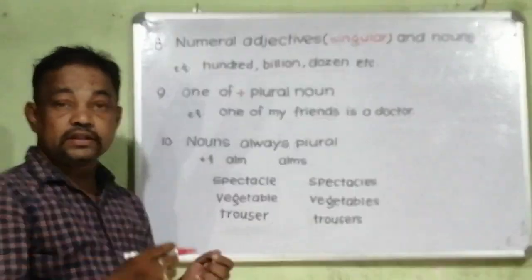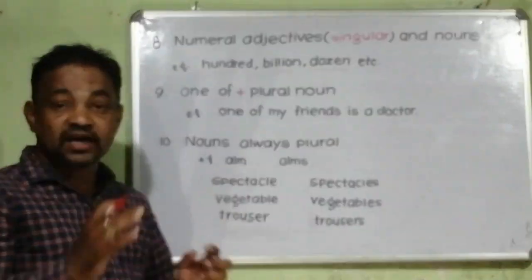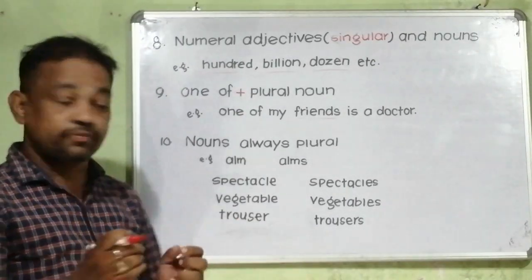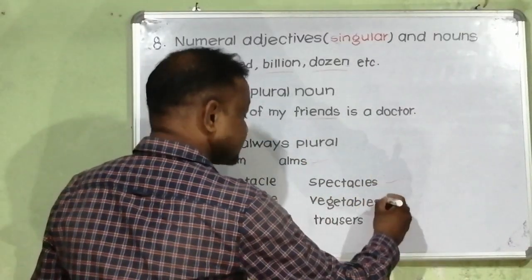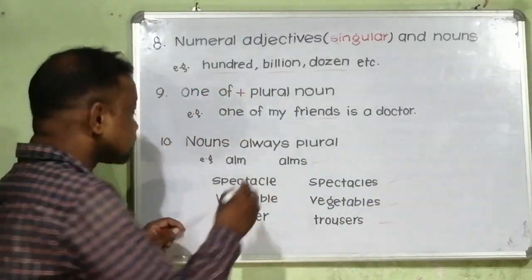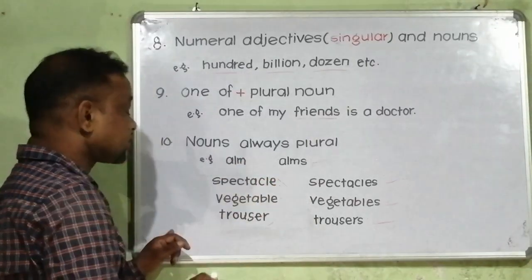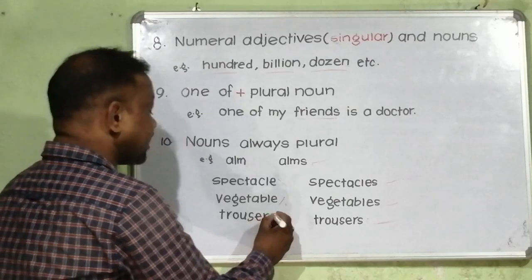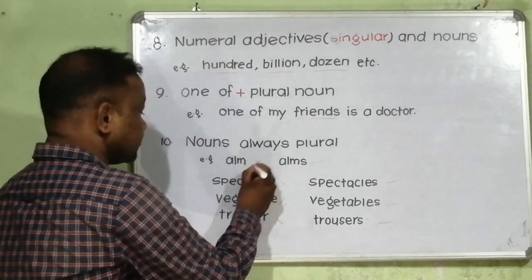Rule number ten: nouns always plural. There are some nouns that are always used in plural forms. For example, arms, spectacles, valuables, and treasures. You cannot write arm, spectacle, valuable, or treasure. These are required to be plural.